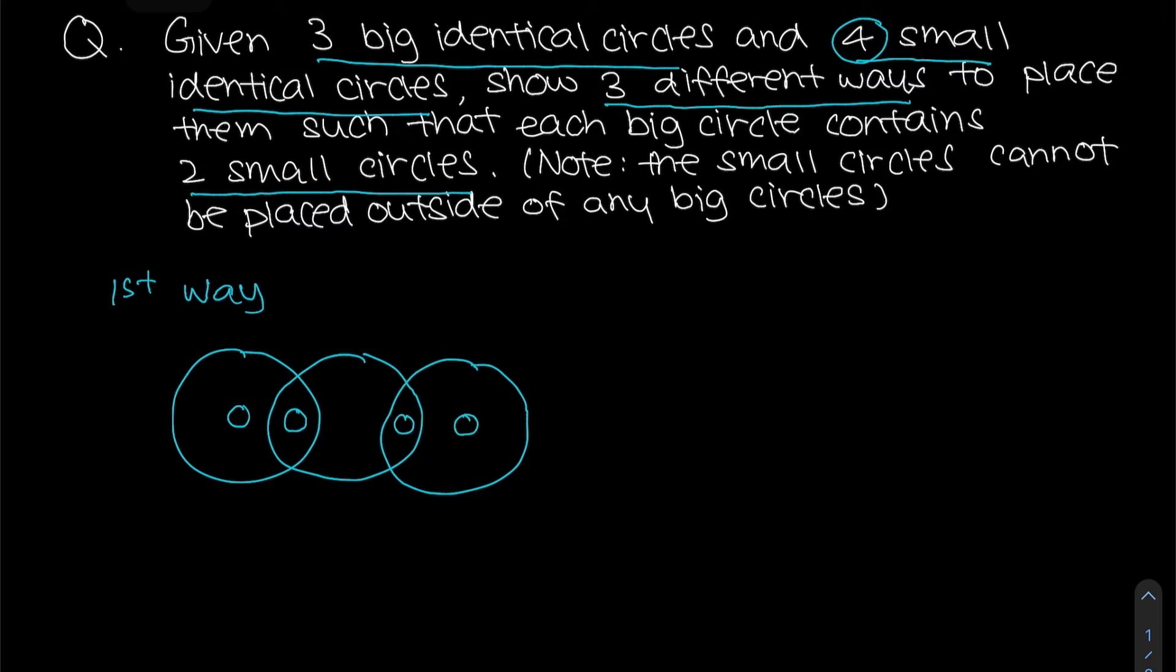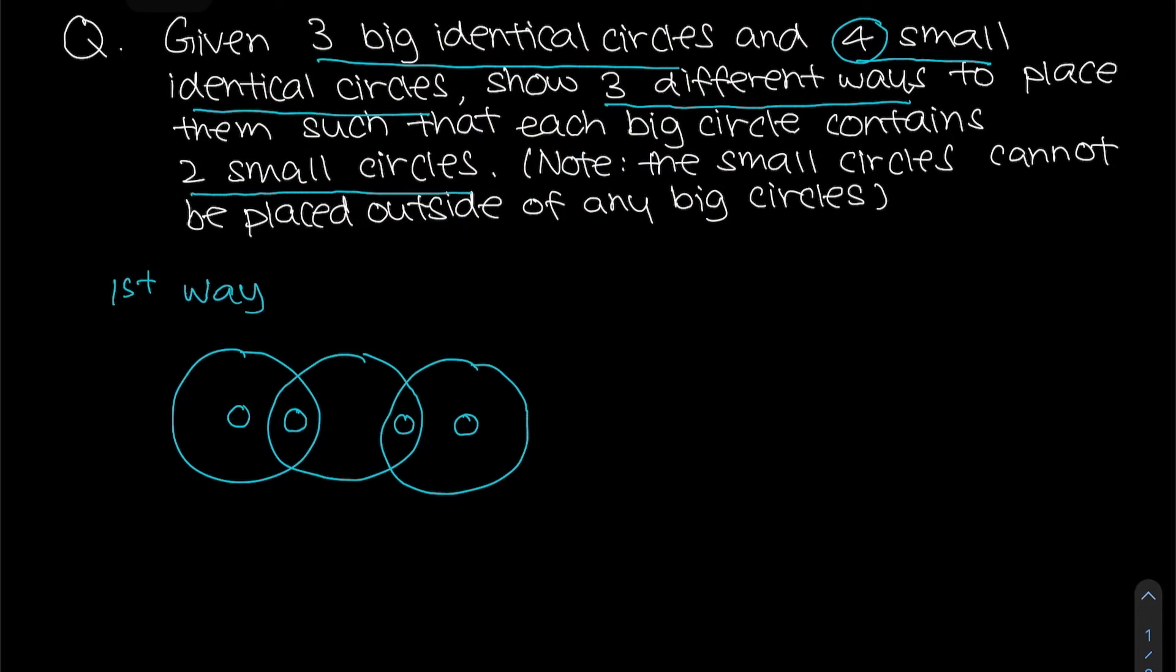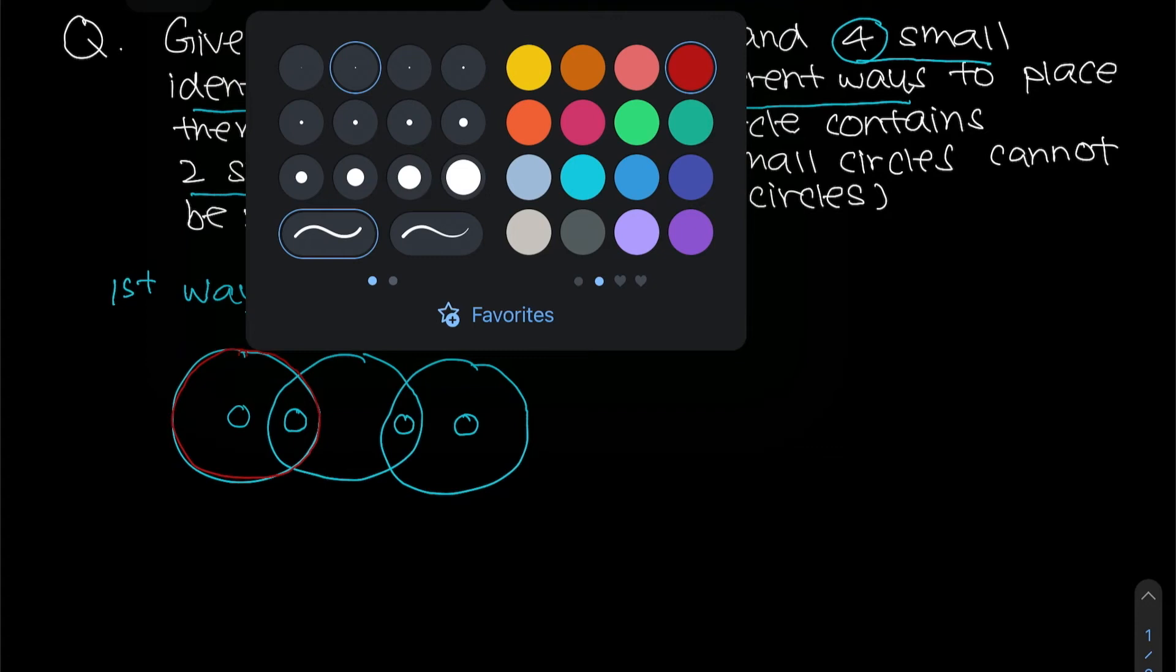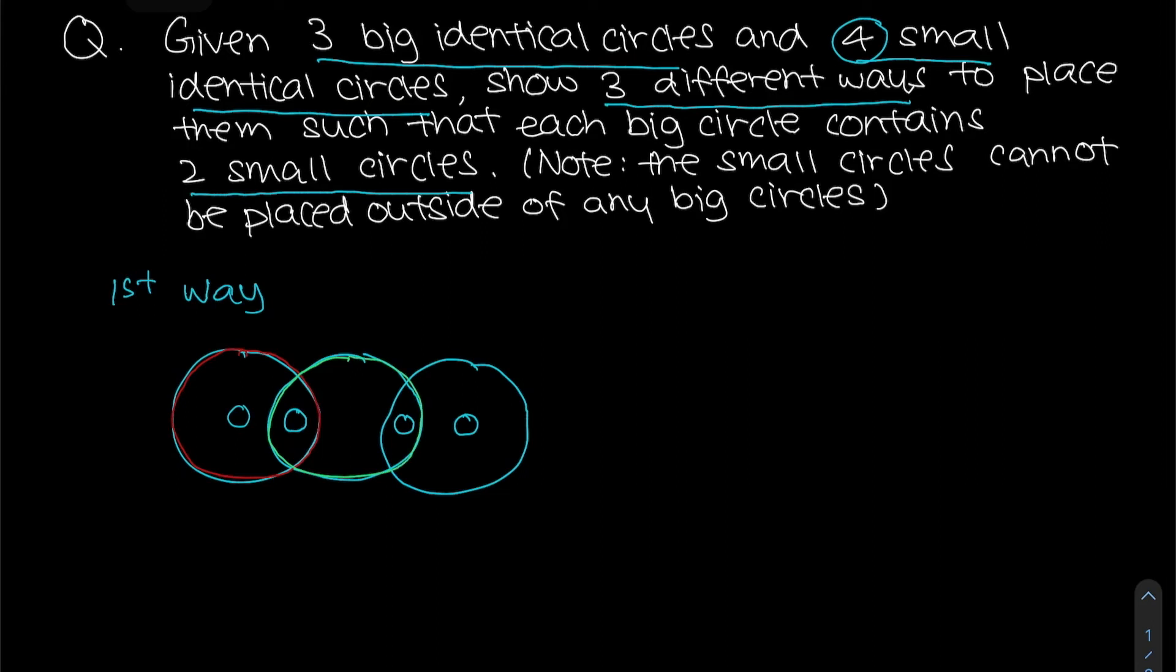And you'll realize that in this particular case, you will notice that each circle will have two small circles. So you'll notice that for example, this circle will have two small circles, the one in red. So I'm going to use another color. You'll notice that this over here, the center circle will also have two small circles.